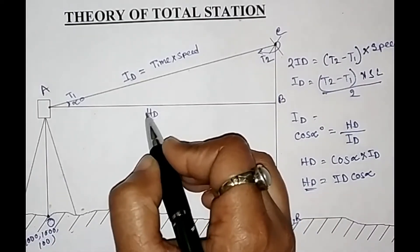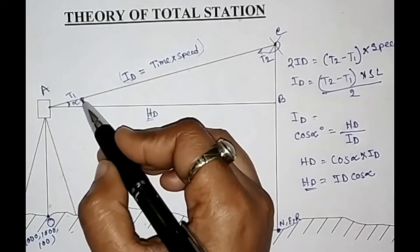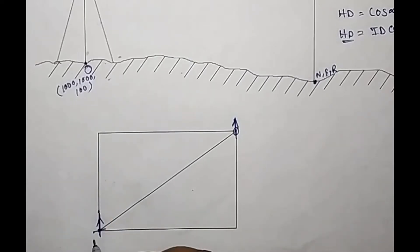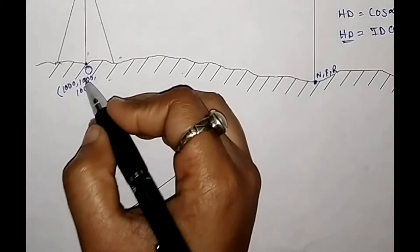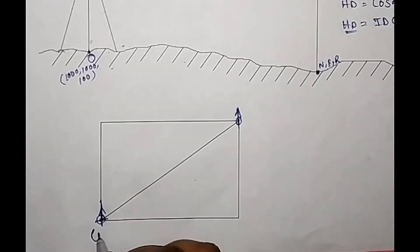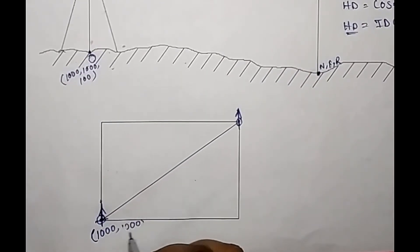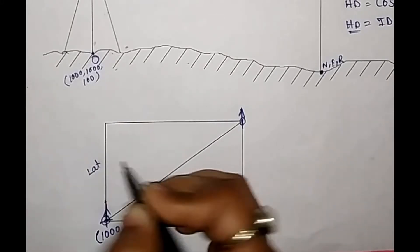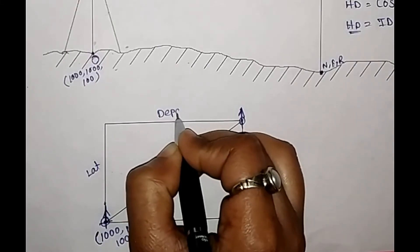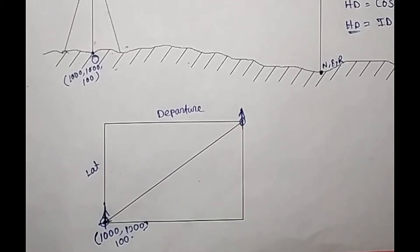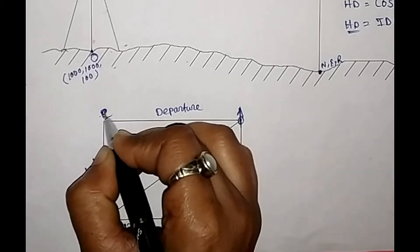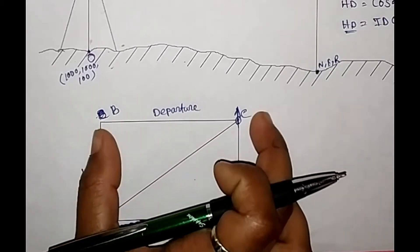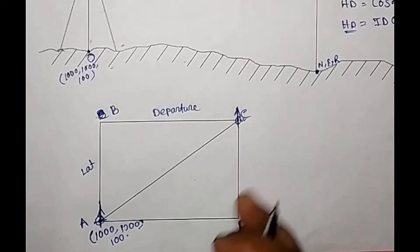Now here I am drawing another section — a plan view of the total station position. Here our coordinate value is northing 1000, easting 1000, and elevation 100. If we find the latitude and departure values and add them to the coordinate of this point — labeled A, B, C, and D — we can get the coordinate of the unknown position. We have already made a video on this topic available in our channel playlist.